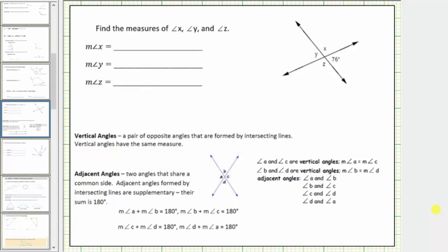In this lesson we will look at two examples of determining the measure of angles from a given diagram. The first example involves vertical angles and adjacent angles.